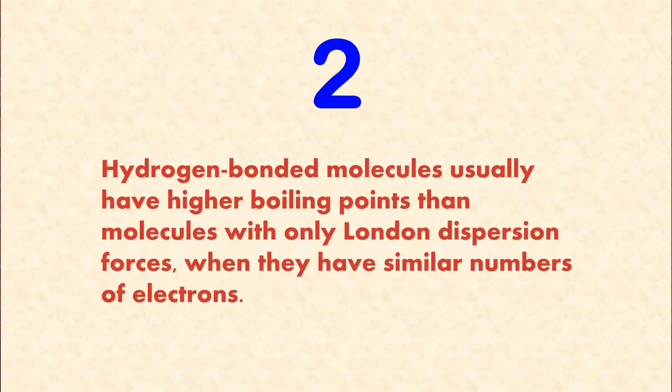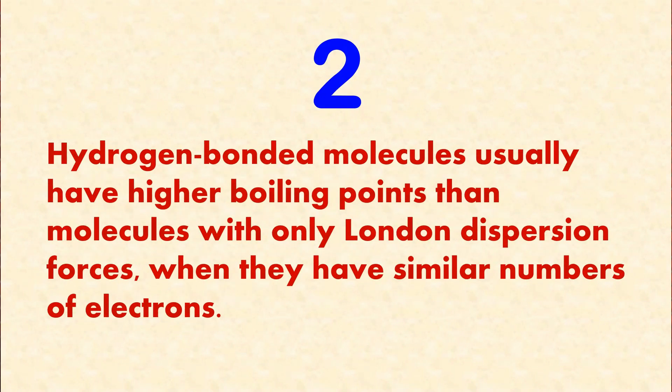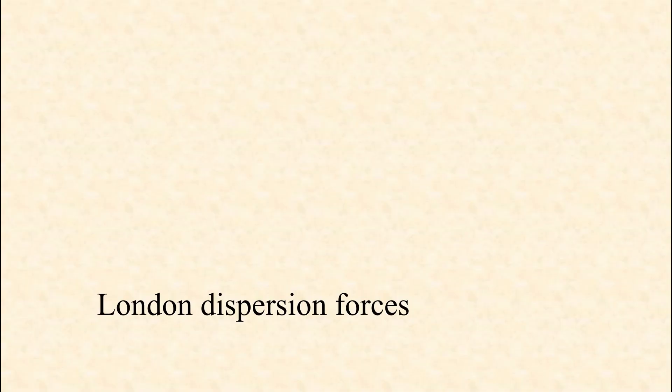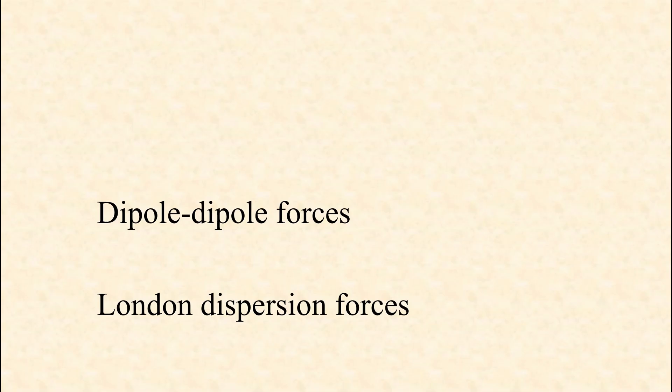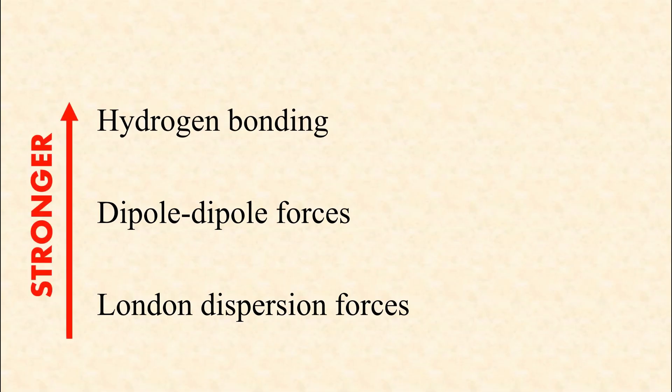Number 2. Hydrogen-bonded molecules usually have higher boiling points than molecules with only London dispersion forces when they have similar numbers of electrons. Molecules with only London dispersion forces generally have the lowest boiling points because those forces tend to be the weakest. Dipole-dipole forces, which are possessed by polar molecules, tend to be a little stronger. And hydrogen-bonded molecules tend to be stronger still. So this is the hierarchy of the intermolecular forces.